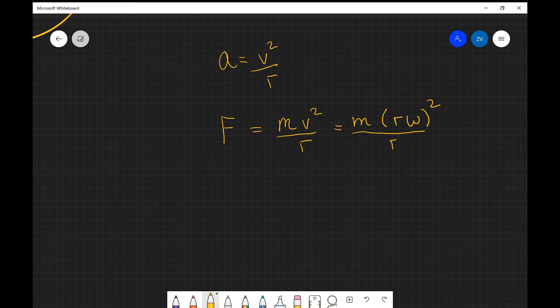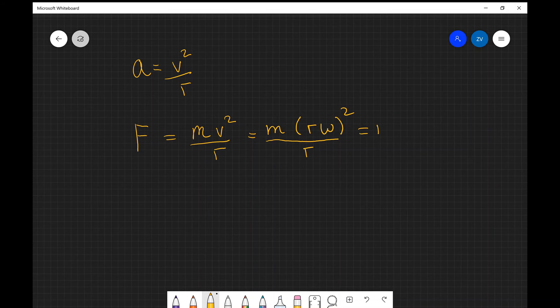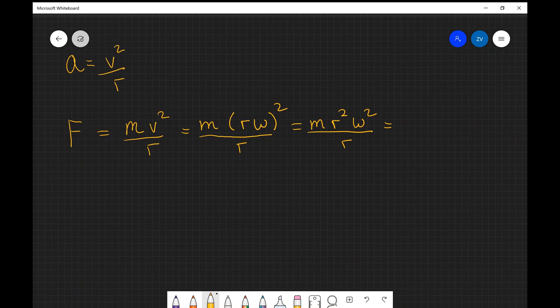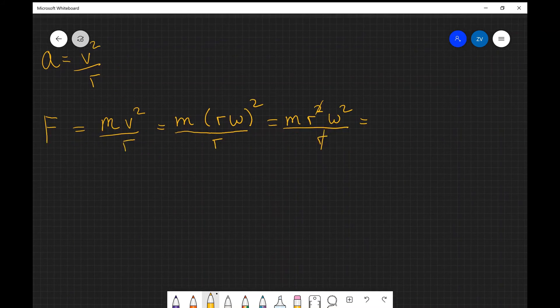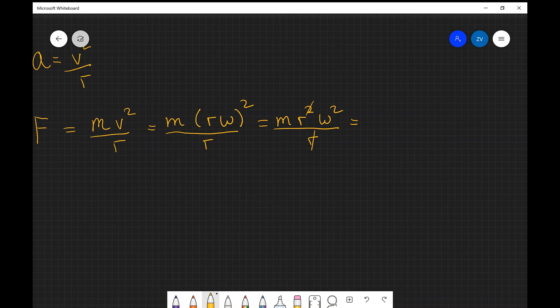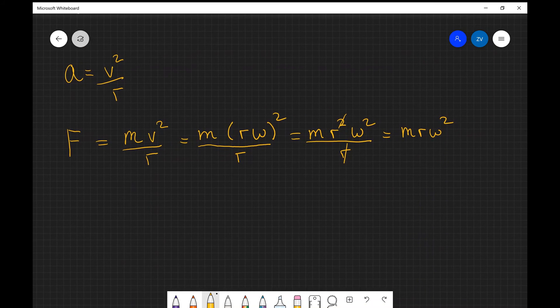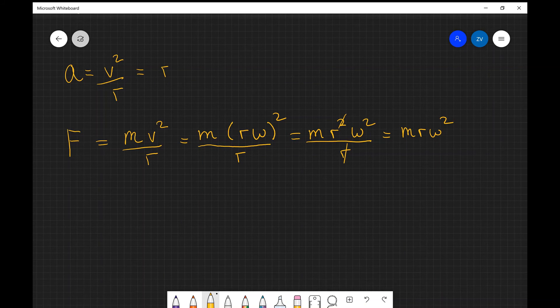So just to finish this little derivation, we just need to expand the brackets. So this is going to give us m r squared omega squared divided by r. And if we just do a little bit of cancellation, so if we cancel this r term, we're going to get that the net force is equal to m r omega squared. Or additionally, just without the mass, the centripetal acceleration could also be given by the radius multiplied by the angular velocity squared.